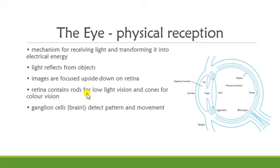The rod is highly sensitive to light and therefore allows us to see under low-level illumination — for example, in a darkened room. However, rods are unable to resolve fine detail and are subject to light saturation. This is the reason for temporary blindness when we move from a darkened room into sunlight — the rods have been saturated by the strong light, and that is responsible for the temporary blindness.